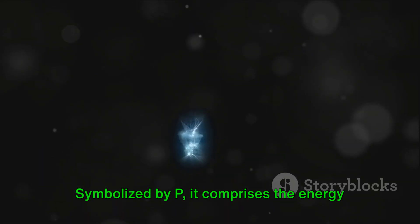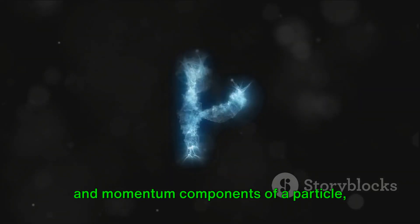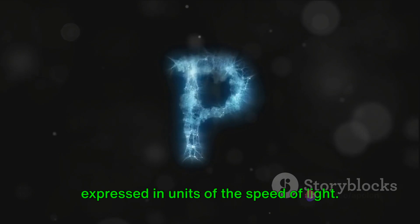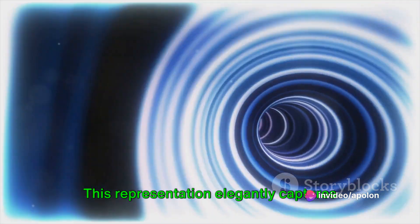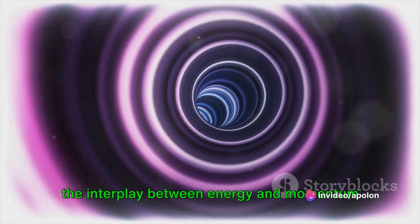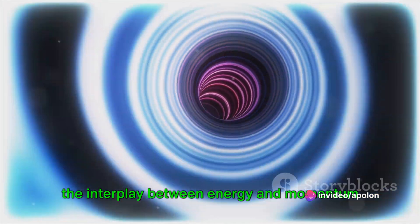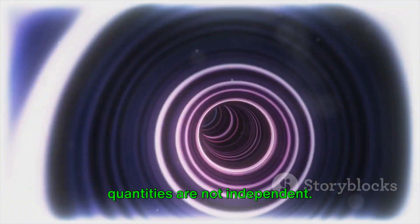Symbolized by P, it comprises the energy and momentum components of a particle, expressed in units of the speed of light. This representation elegantly captures the interplay between energy and momentum in the context of relativity, where these quantities are not independent.